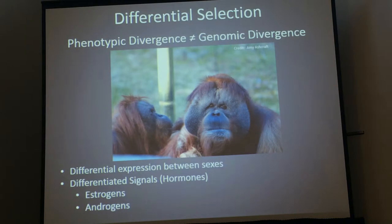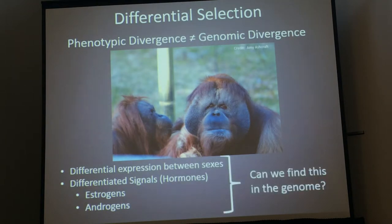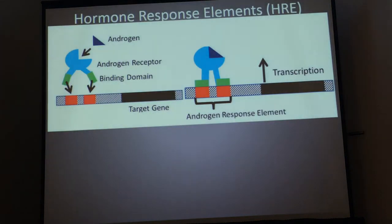There are sex-specific signals that indicate that this orangutan is a male, and as a result he ends up with male traits. Those signals are usually in the form of androgens, and the female signals are usually in the form of estrogens. So where can we find this in the genome? How are these hormones signaling in the genome that a particular trait should be up or down regulated? One of the methods is through the hormone response element.